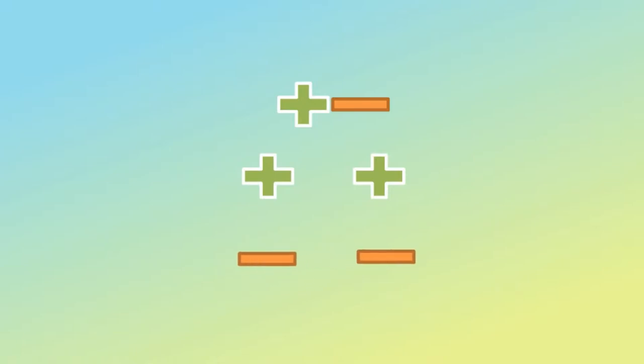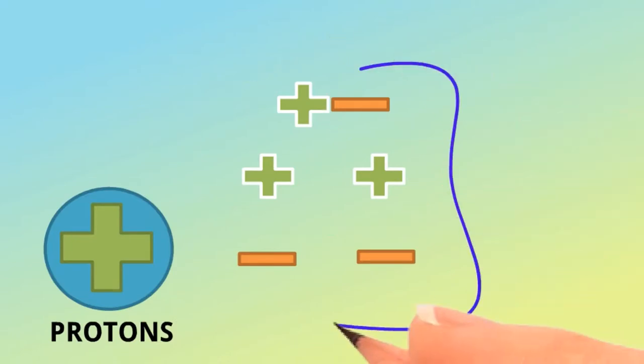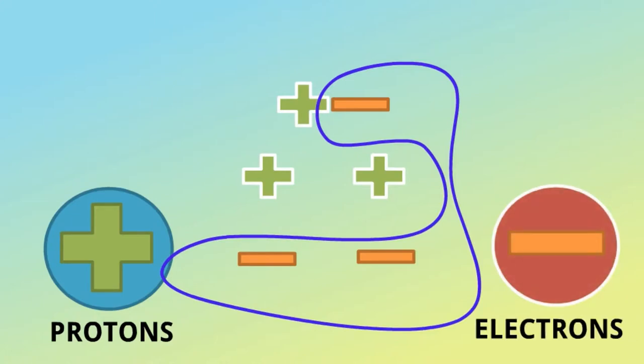All positive charge is carried by a very minute particle called a proton, and all negative charge is also carried by a very minute particle called an electron.